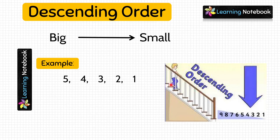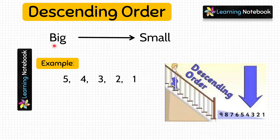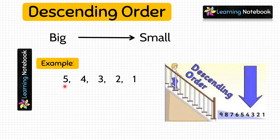Students, take a look at this picture — you can easily remember descending order from it. When we move from upstairs to downstairs, it is called descending. To revise: descending order means arranging numbers from big to small, and one very important point is that in descending order the numbers keep on decreasing, like here the numbers decrease from 5 to 1.